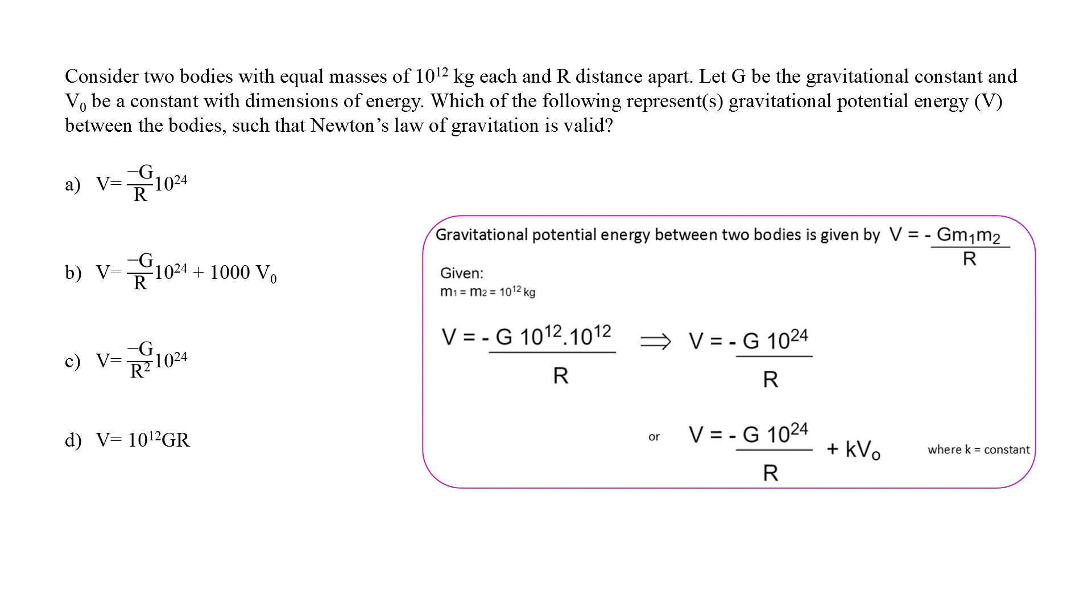It can also be written as V is equal to minus G 10 to the power 24 by R plus KV0. Because it is given in the question that V0 is a constant with the dimensions of energy. This is similar to option B where K, the constant is equal to 1000. Option A and B are the correct choices for this question.